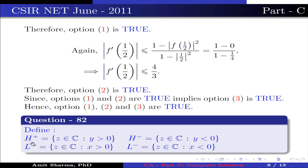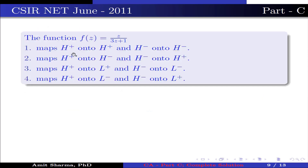Question number 82. Define H⁺ = {z ∈ C : Im(z) > 0}, H⁻ = {z ∈ C : Im(z) < 0}, L⁺ = {z ∈ C : Re(z) > 0}, L⁻ = {z ∈ C : Re(z) < 0}. The function f(z) = z/(3z+1): option 1 maps H⁺ onto H⁺ and H⁻ onto H⁻; option 2 maps H⁺ onto H⁻ and H⁻ onto H⁺; option 3 maps H⁺ onto L⁺ and H⁻ onto L⁻; option 4 maps H⁺ onto L⁻ and H⁻ onto L⁺.